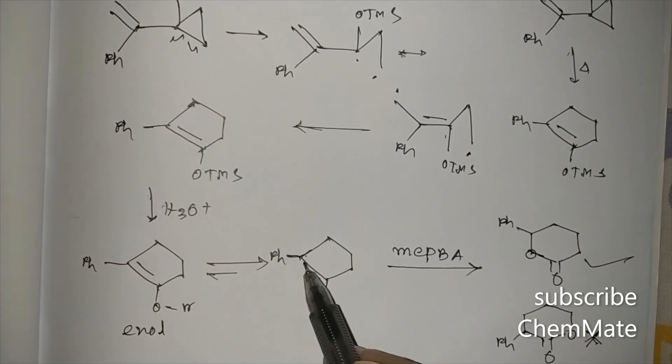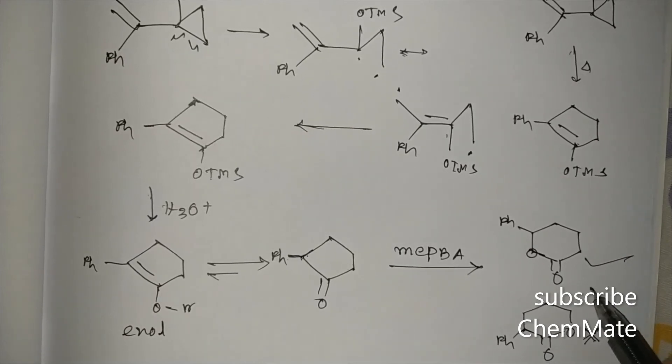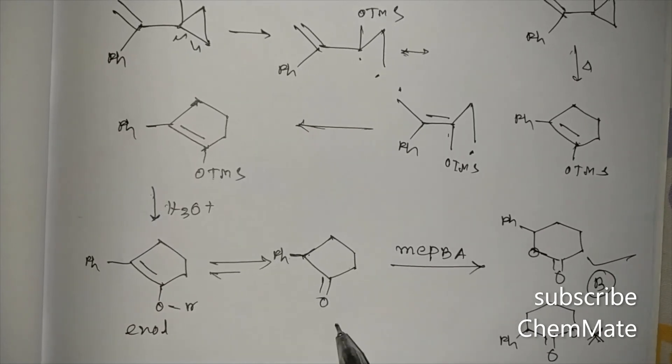So here the ester will be formed, and the major product will be this. So this is our B, and this is A.